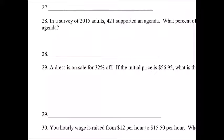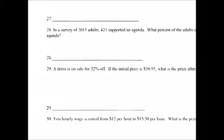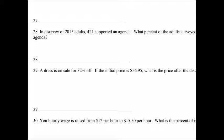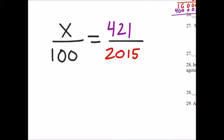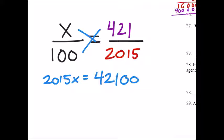2015 adults, of 2015 adults, 421 supported an agenda. What percent of the adults surveyed supported the agenda? Okay, so this is our percent proportion and we can use cross multiplication. 2015 times X equals, cross here, two zeros.